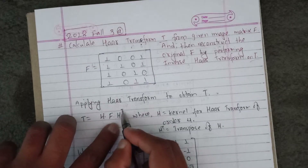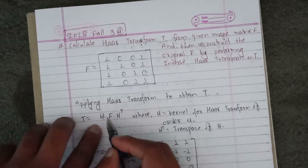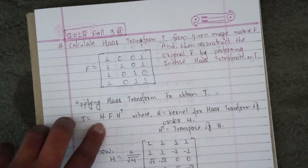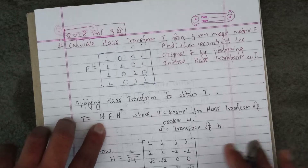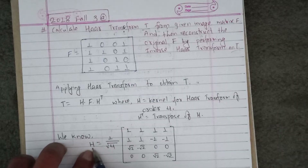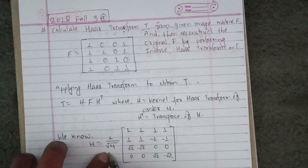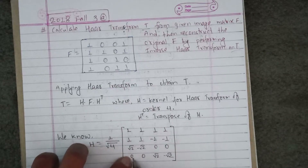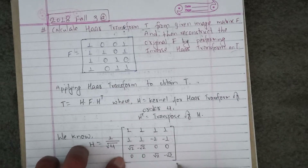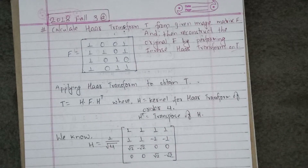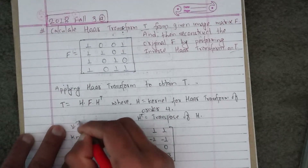This is an R transformation. If you have to do this, you cannot see it directly, so I will find it out. In R mod, K equals K transpose.